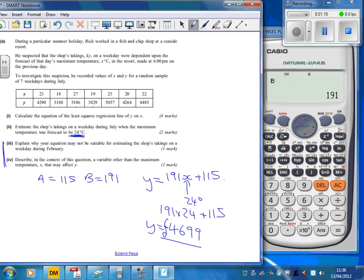We've got two interesting interpretation marks where you need to use some intelligence. Why would this not be suitable in February? Well, February is totally different to July, isn't it?